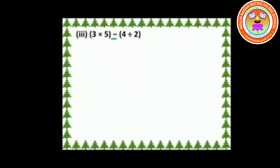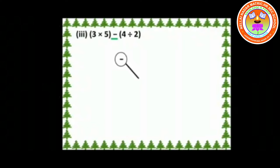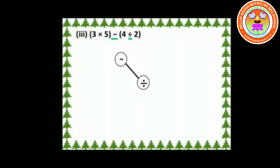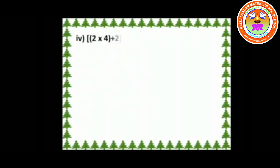For the third one, the symbol minus is the node. Its branches are ÷ and ×. For the branch ÷, the leaves are 4 and 2. For the branch × (into), the leaves are 3 and 5. Fourth one: 2 × (4 + 2) × 8 ÷ 2. In this, the symbol × is the node.